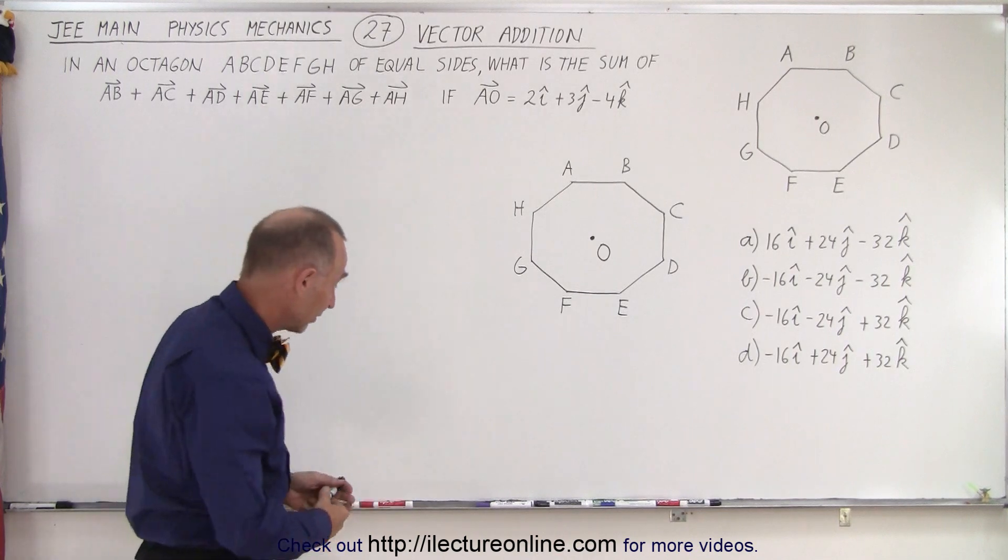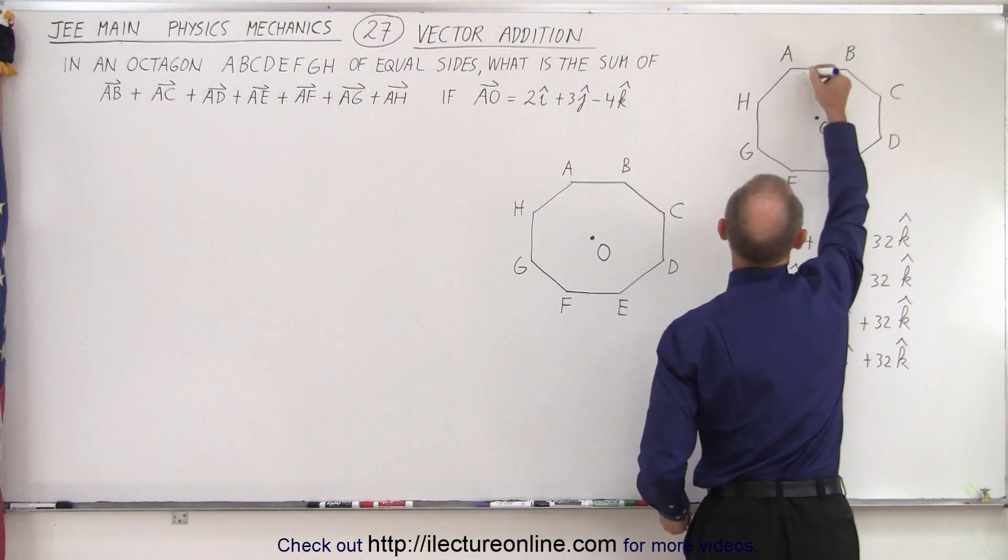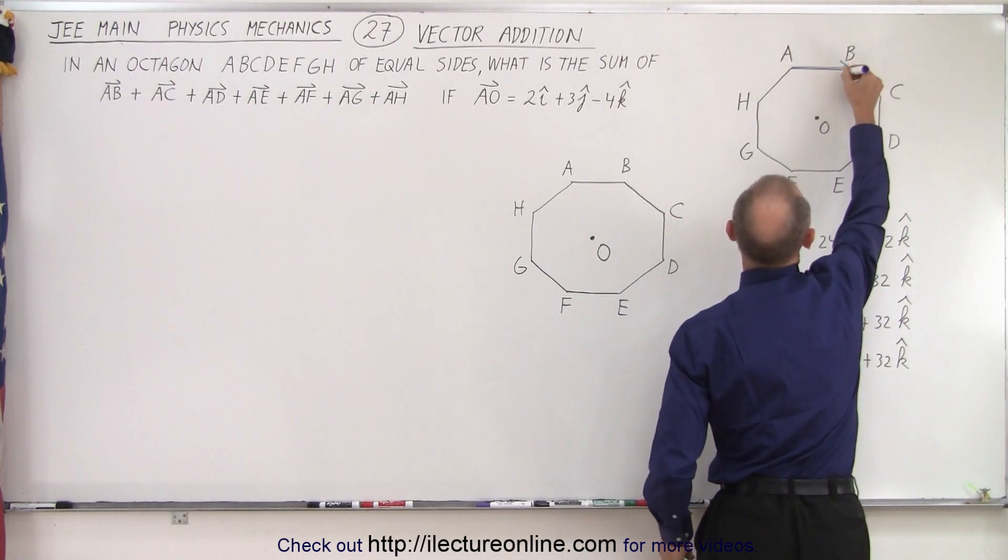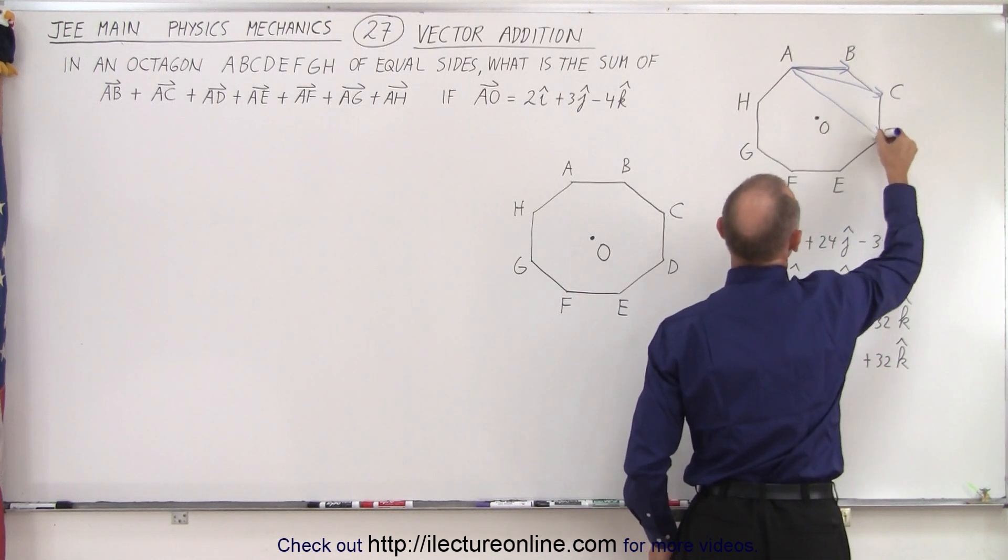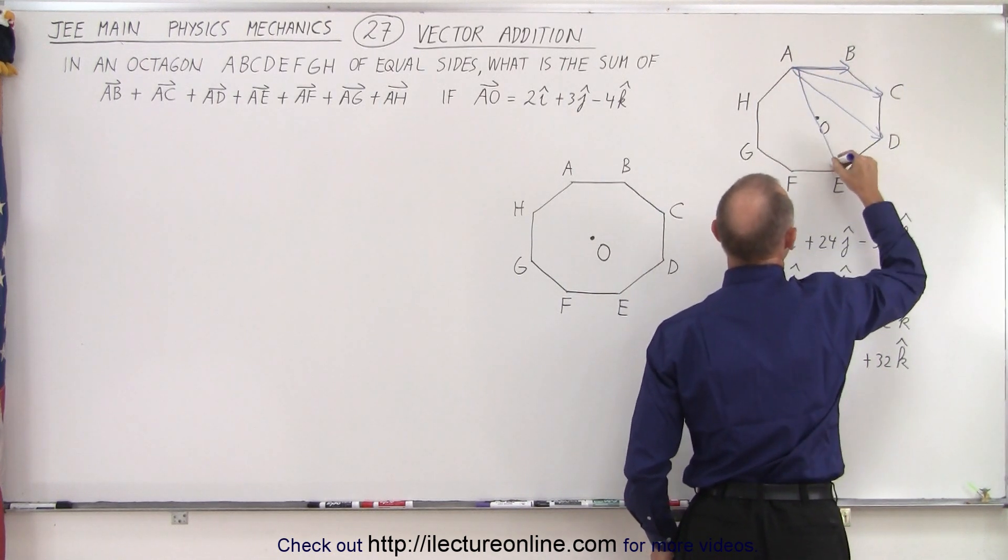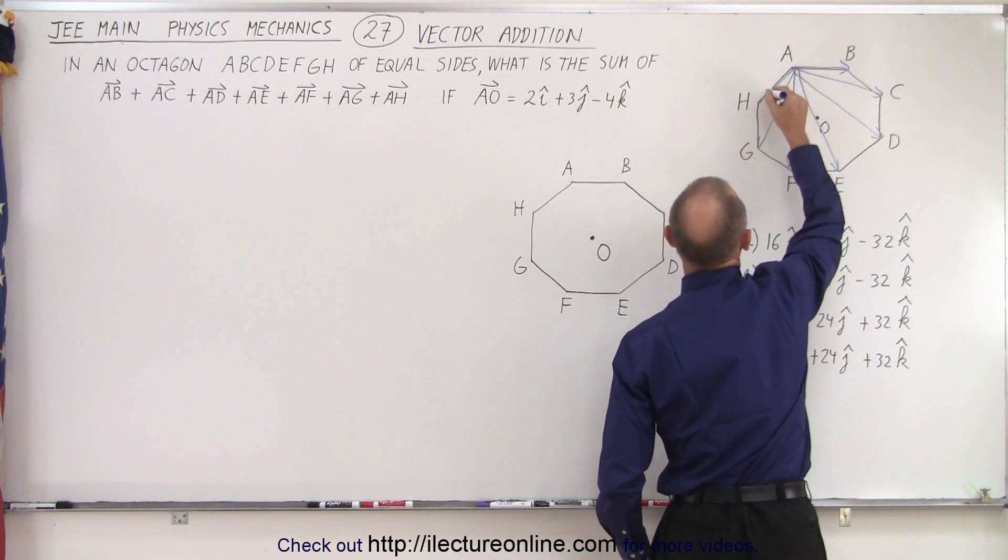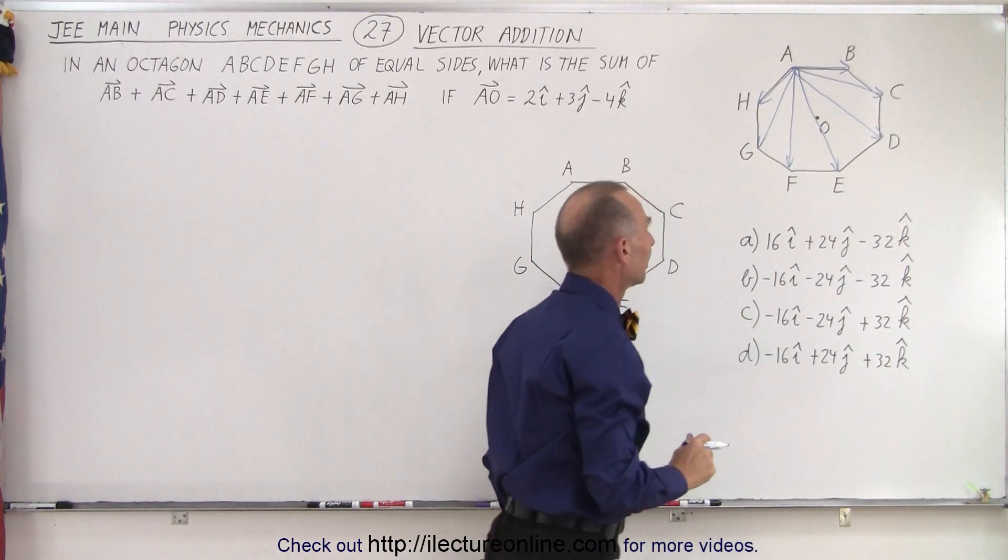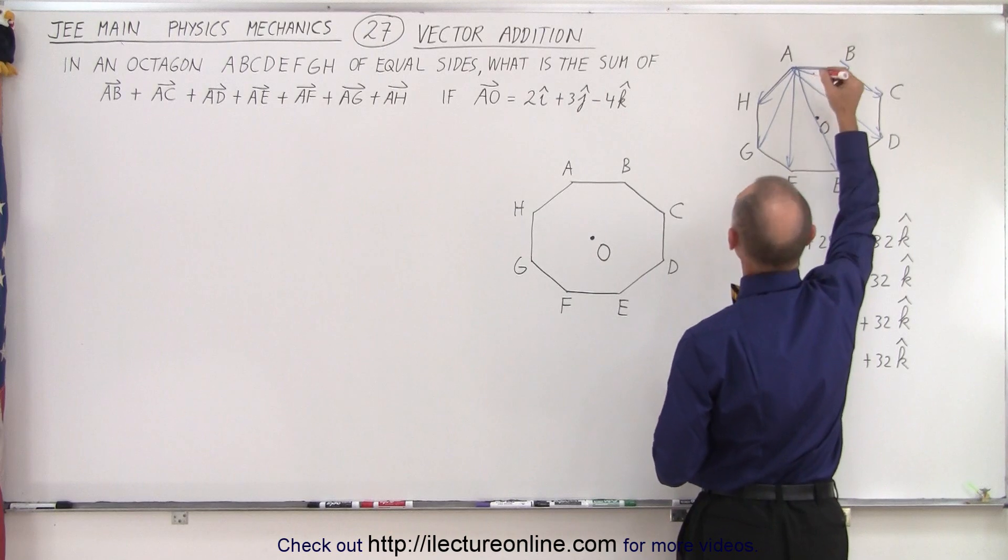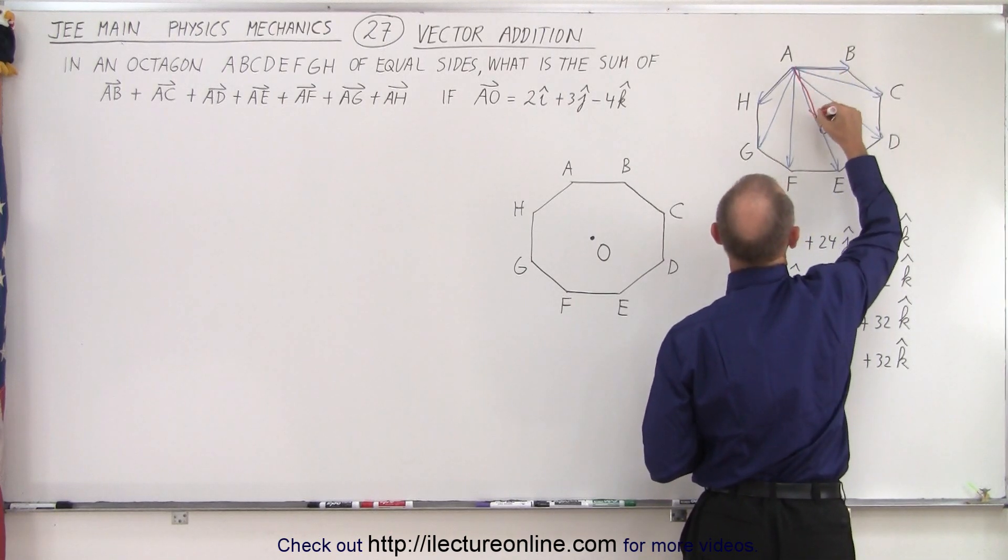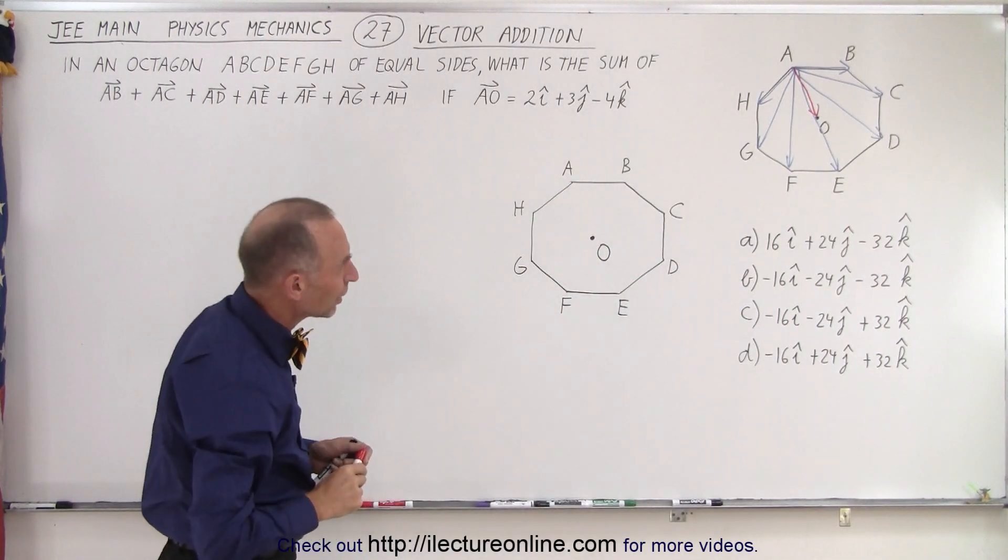Well, let me show you what they're actually asking us to do. They're saying draw the vector from A to B, that's this vector right here, then have a vector from A to C, from A to D, from A to E, from A to F, from A to G, and from A to H, and then add them together. And you only know this vector. This vector right here is the only known vector. So, how do you go about doing that?